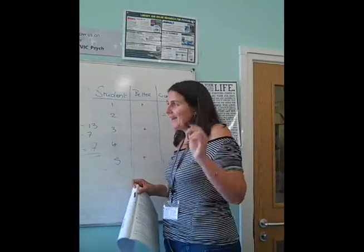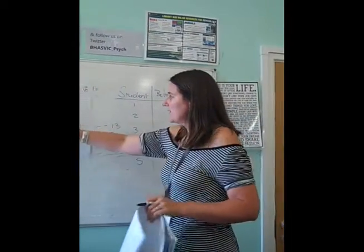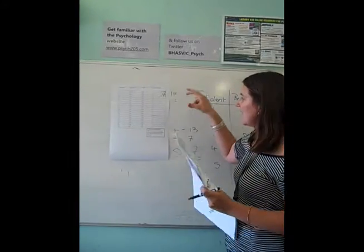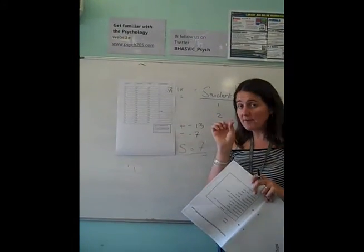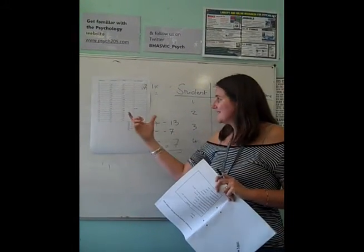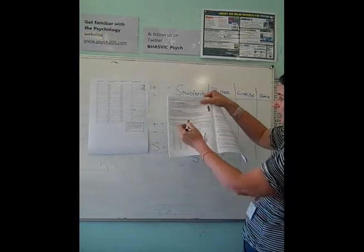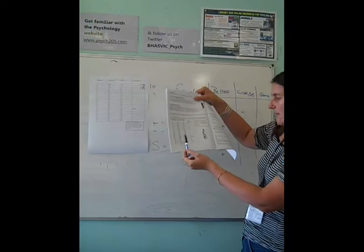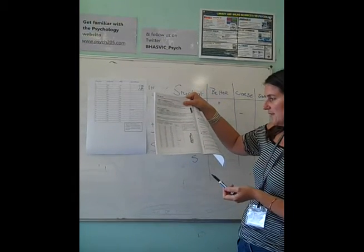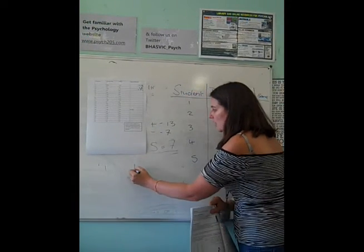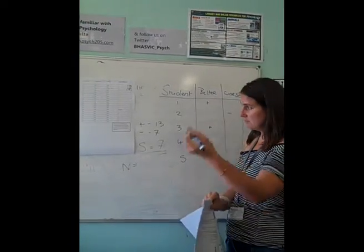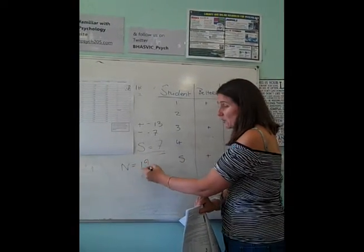So our N, now, it's not simply 20, because there were 20 participants. If you have any participants where there is no difference, where it's the same, you ignore that. So if you look here, on our example, there is one person where there was no difference.